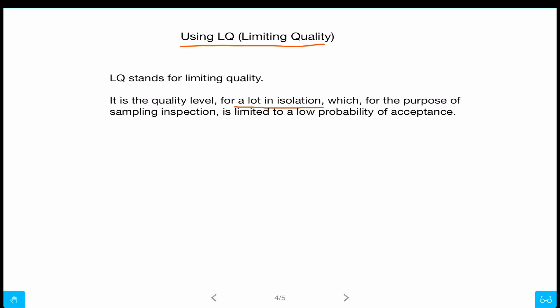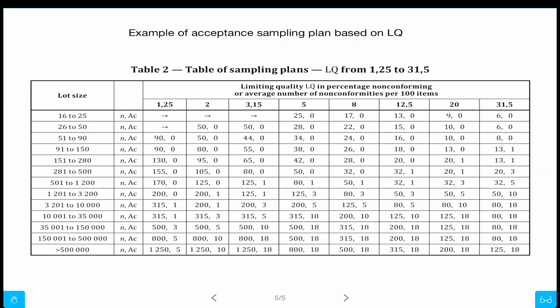This comes directly from the standard, ISO 2859 dash 2. Dash 1 was for AQL, dash 2 is for LQ and for lots in isolation. This is a very important word. And just to make sure you understand how it works, there's nothing better than going through an example.